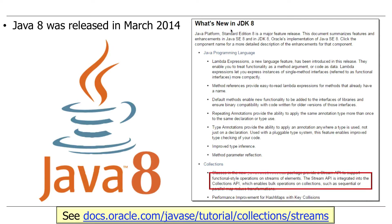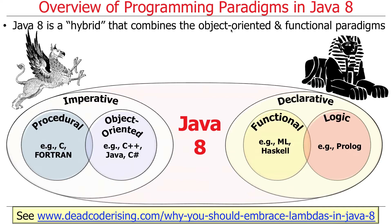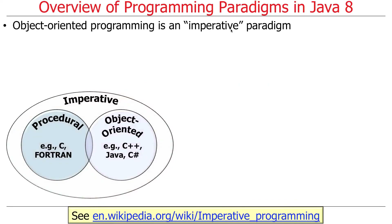That's what we're going to be focusing on once we get this quick overview out of the way. Java 8 is a hybrid language — it combines object-oriented programming, which it drew from C++, with functional programming borrowed from languages like Scala, ML, or Haskell. So Java 8 combines both. We have imperative and declarative paradigms — those are the fancy names for these things.